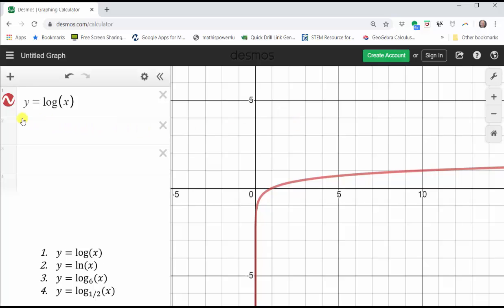And now click in cell two, and enter the next function, which is y equals natural log x. We enter y equals ln, and then in parentheses x, enter. And again, the graph appears.